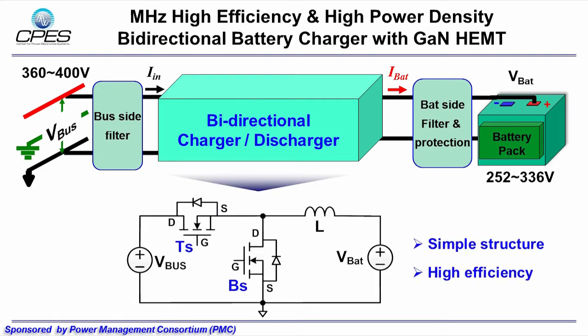Buck boost converter is used due to its simplicity and high efficiency. The top and bottom switch are both 600V GaN switches.